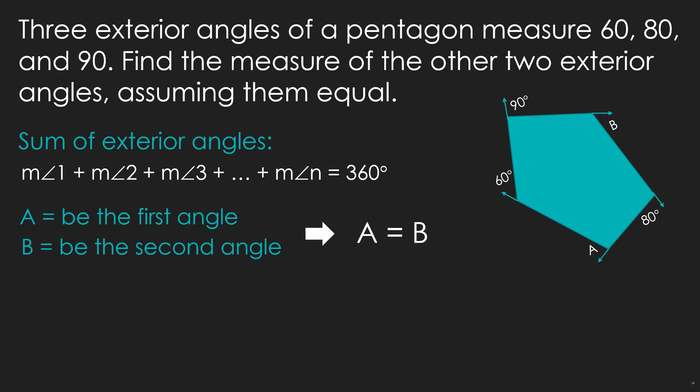Using the concept of substitution, we can replace angle B with angle A, since they have the same measure. Because of this, when we add all the exterior angles, this will be our mathematical statement: 60 + 80 + 90 + A + A = 360.